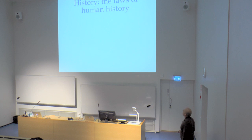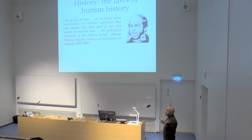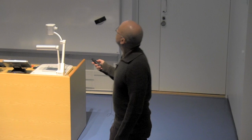Henry Thomas Buckle, in his 'History of Civilization in England,' went even further, saying that the actions of men are in reality never inconsistent — they only form part of one vast system of universal order, the underlying regularity of the modern world. Not everybody liked that — and certainly not Friedrich Nietzsche, the guy of the Superman, who believed that men so far above average could, with their actions, determine the fate of whole populations. He was strongly convinced that the actions of men affected history, and we know this had tragic consequences in the 20th century.